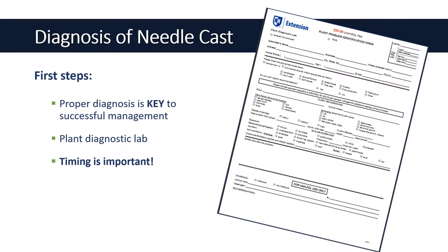Accurate and timely diagnosis is an essential step when dealing with a needle cast. Have a proper diagnosis done by your local plant diagnostic lab. Typically, your lab report will include treatment options and possibly spray recommendations. Timing is important — most protective fungicidal sprays are applied shortly after bud break when infections tend to occur.